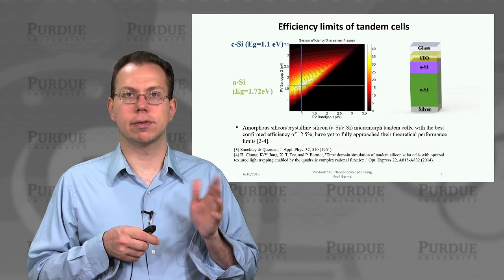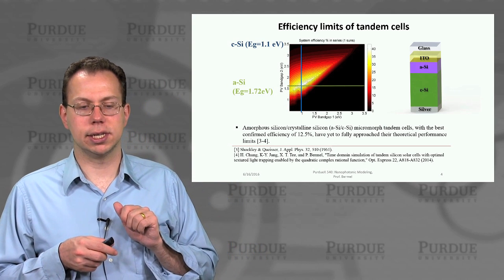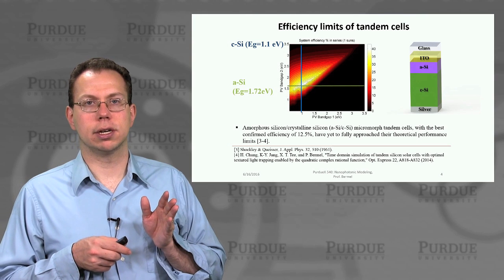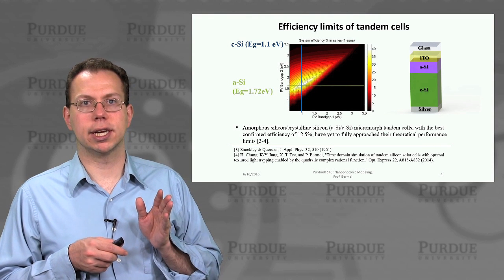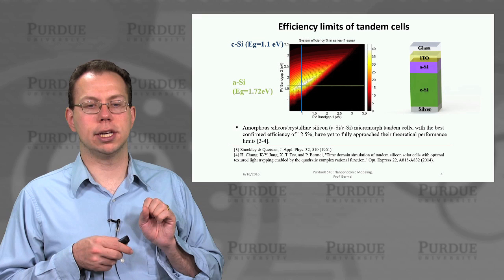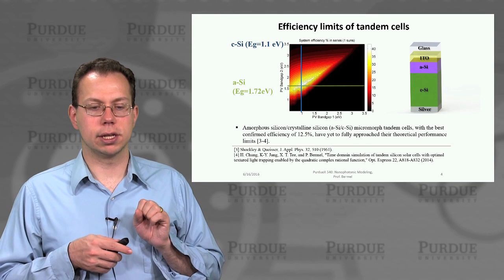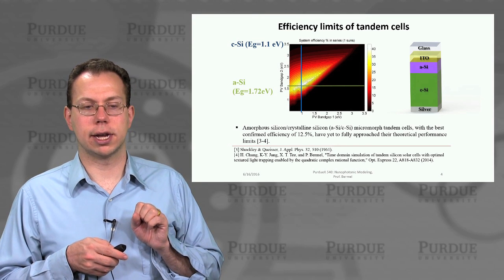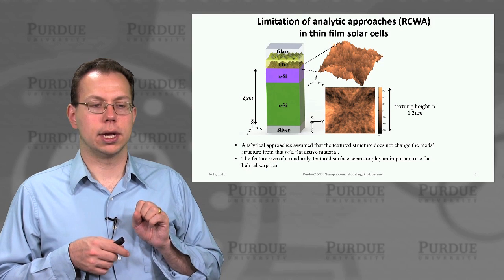Now, people have tried to build these, of course. But the efficiencies for tandems are typically on the order of 12 and a half percent. And then if they go to triple junction, maybe like 13 or 14%. But there's still certainly a lot of room for improvement.